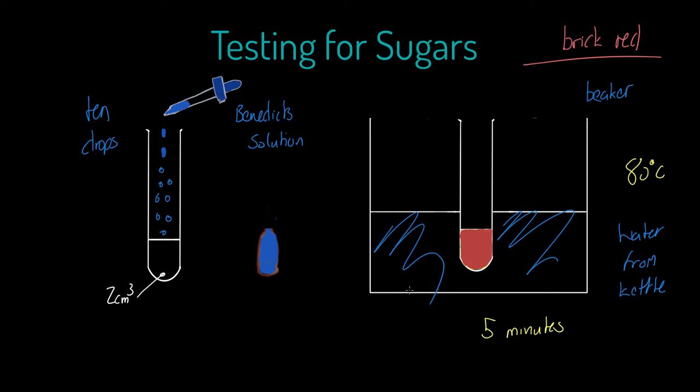That there is a nice example of how we test for sugars. Can I just remind you, low quantities of sugar, we would expect to see a kind of greeny color, blue to green. Medium sugars, yellowy. Lots of sugars, orange to brick red. That term is really important for us.